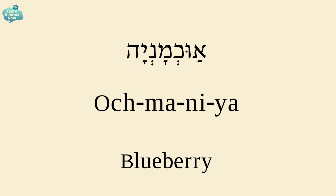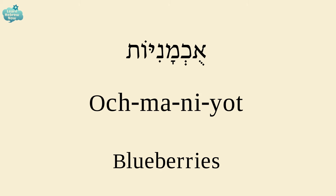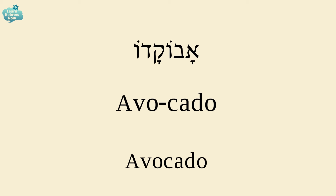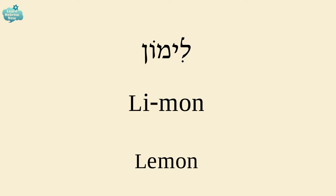A blueberry is UCHMANIYAH. And the plural for blueberries is UCHMANIYOT. And avocado is AVOCADO — just like in English.